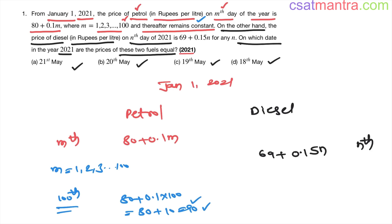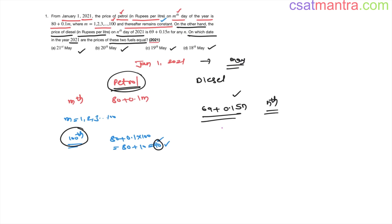That is after 100 days. From January to May we have more than 100 days, so petrol price would be constant after the 100th day, that is 90. Now diesel price is this much on a particular nth day. All you have to do is equate this to 90 because after 100 days petrol price is 90.